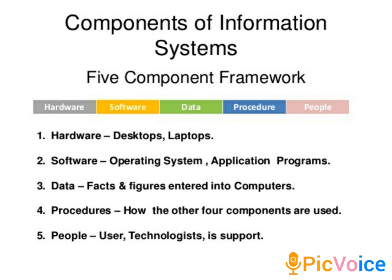Good morning. This class is for third year BBA on components of information technology. We have already seen what is information technology and the basics. Now we see the components. There are four major components of information technology: computer hardware, computer software, human resources, procedure, and database management. People is optional and not always considered. These four are the major components, which deal with gathering data, processing data, and communicating to the user.